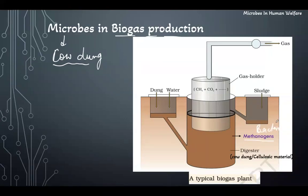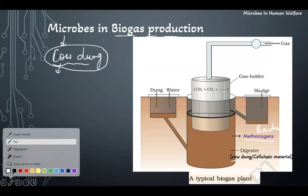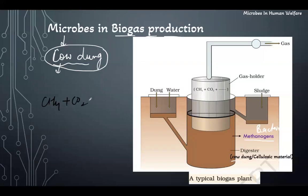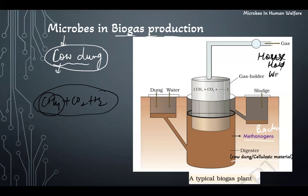Methanogens are bacteria. Some of the methanogens are already present in the gut of cows and other such animals, so the same methanogens can also be used. These methanogens degrade the organic matter, especially the cellulosic material, and produce gases like methane, carbon dioxide, and hydrogen. Out of these, methane gas is an inflammable gas, so we can use it for household purposes like cooking in the kitchen. This is an important point for microbes in biogas production.